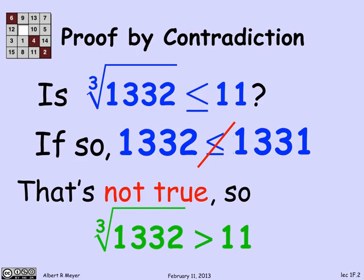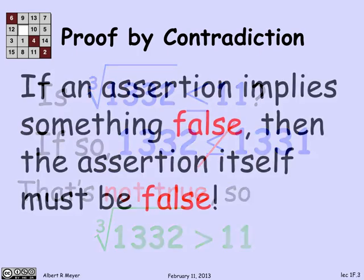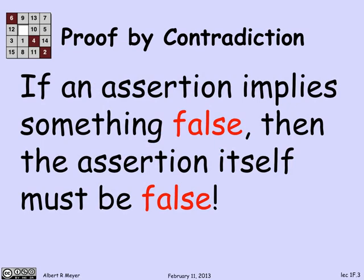Well, this is kind of a toy and simple-minded example to illustrate proof by contradiction. So let's step back and explain and say what it is in general. If an assertion implies something false, then the assertion itself must be false. That's what's going on here.